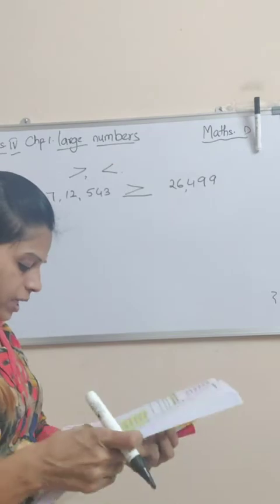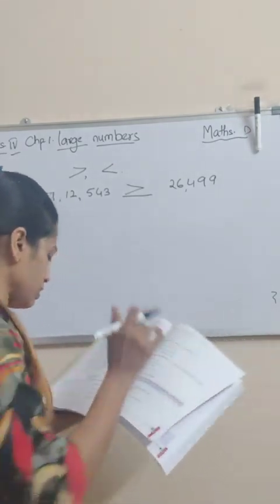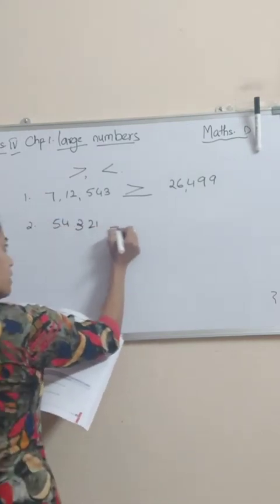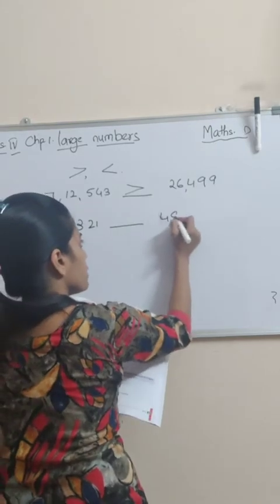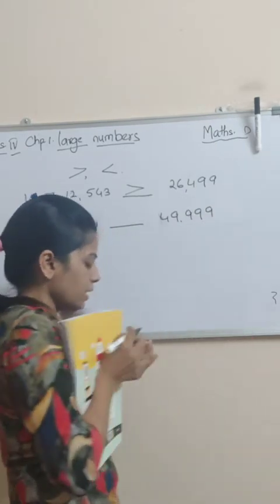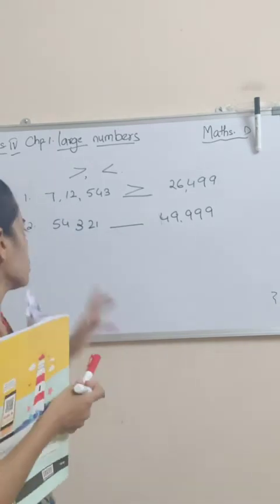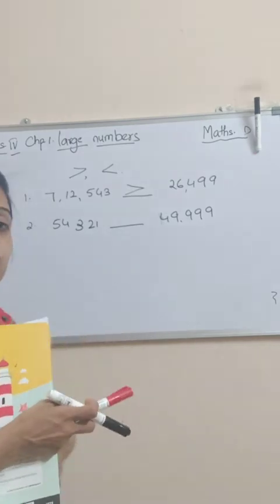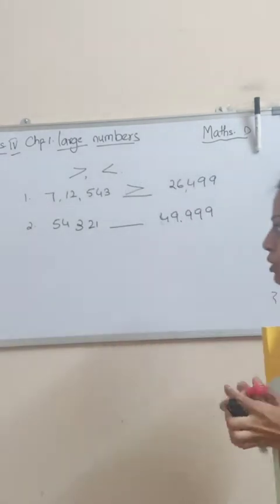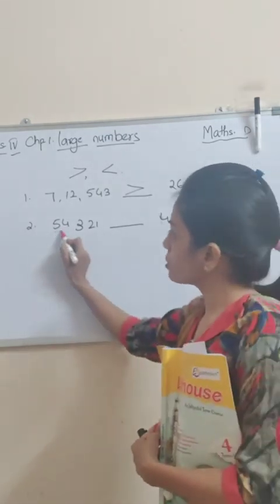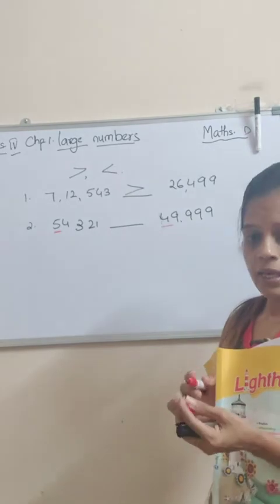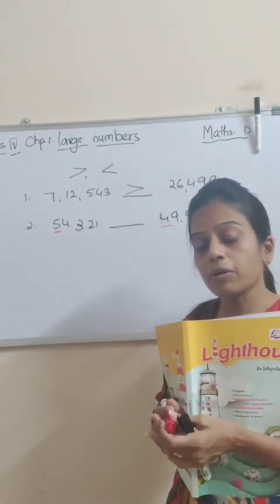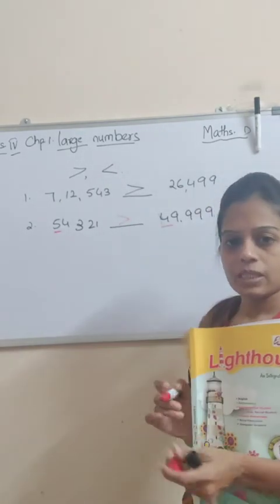Same way — now suppose the second one. Second one is 54321 and this side is 49999. Now, first we will count the numbers: 1, 2, 3, 4, 5 on both sides — both sides are five numbers. In this case, students, what you will do? You have to always see the first number. What is the first number here? Here is 5, here is 4. Now compare: 5 and 4 — which is the bigger number? 5. So, put the greater than sign. Simple.